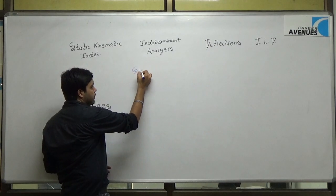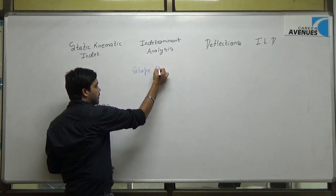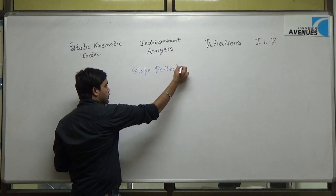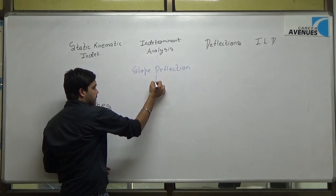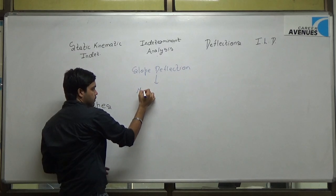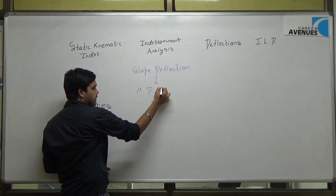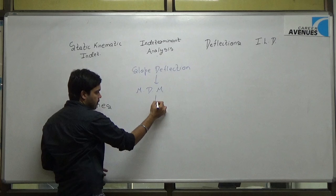In that, we will be taking different types of methods, i.e. slope deflection. The second method will be moment distribution method, it is abbreviated as MDM. The next method will be Kani's method.